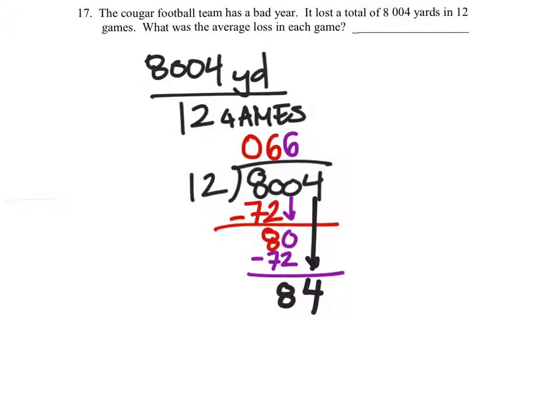How many times does 12 go into 84? Seven times. 7 times 12 is 84. So, when we subtract, we have 0 remaining.